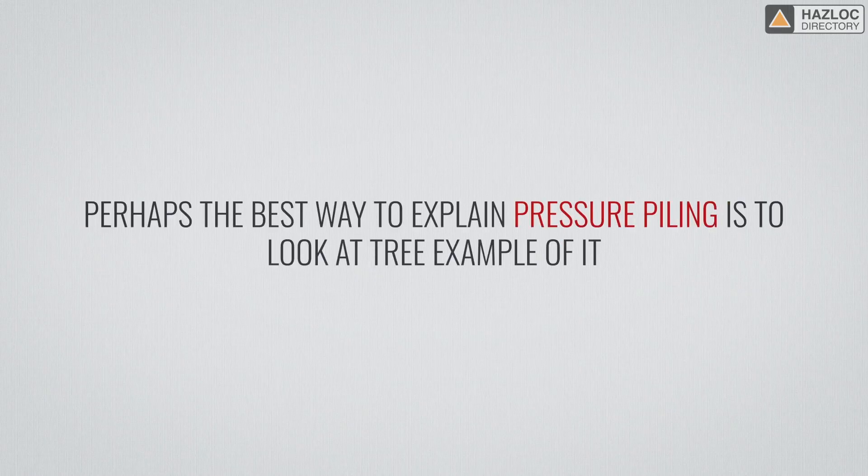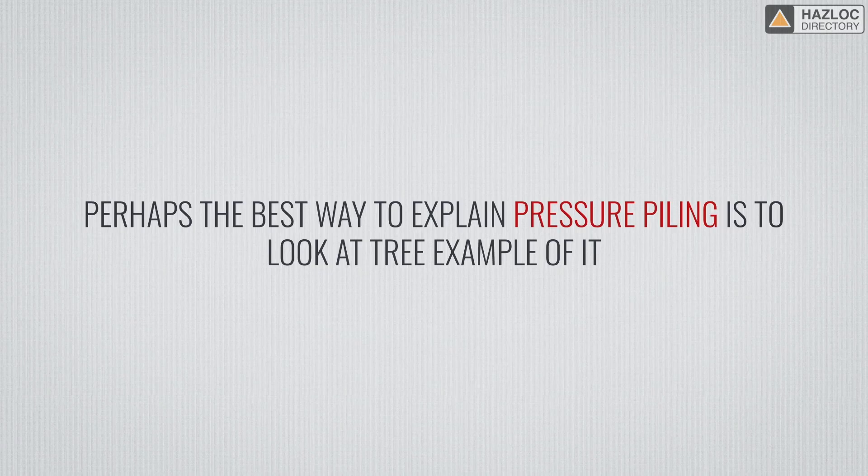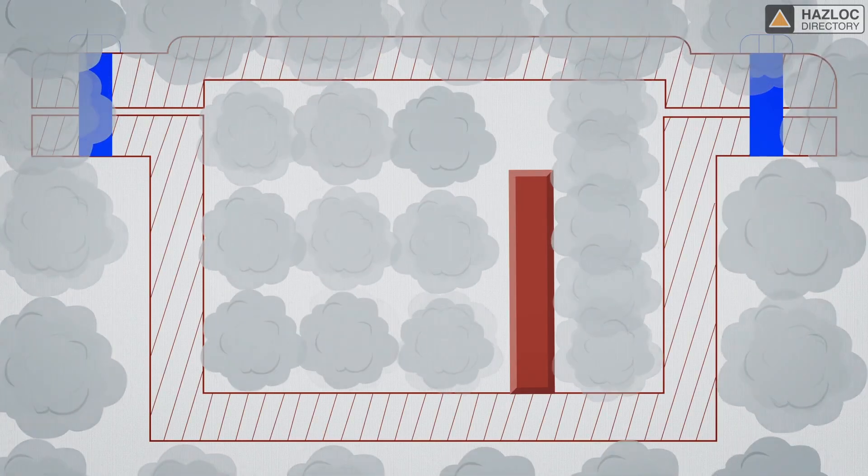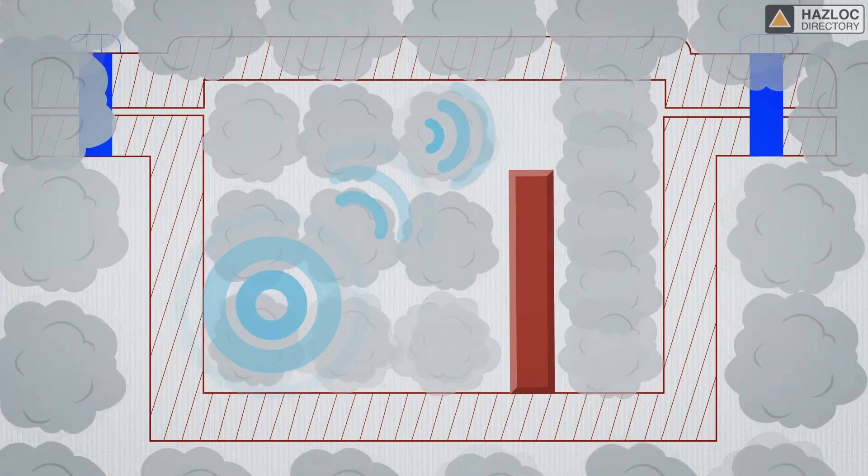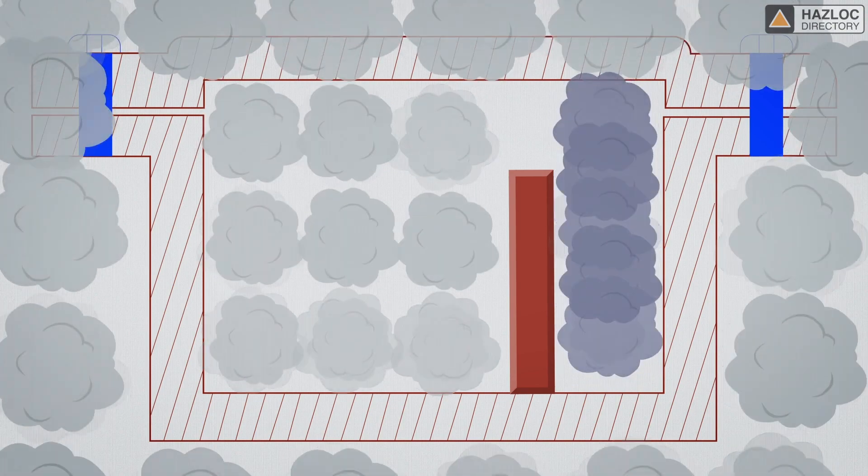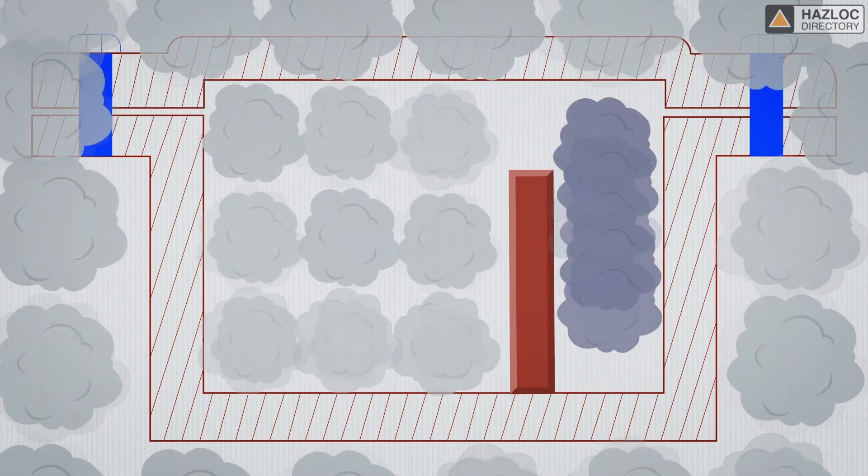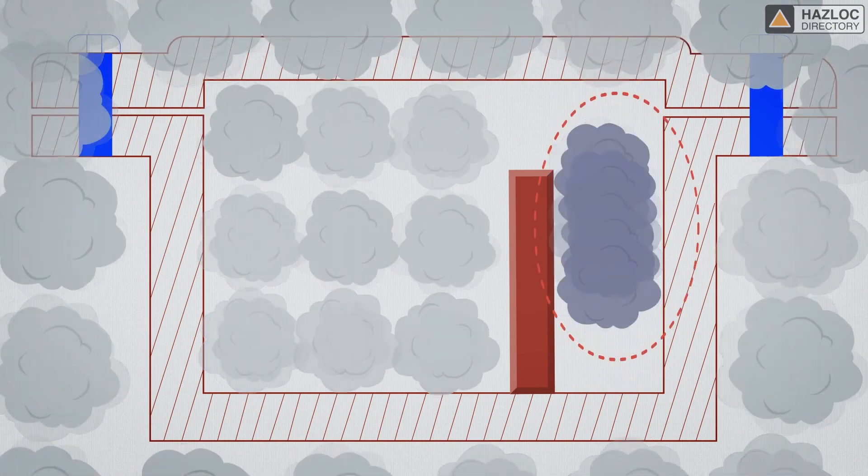Perhaps the best way to explain pressure piling is to look at three examples of it. In our first example, the design of an explosion-proof enclosure with two or more compartments allows unburned gas to collect in a particular space within the enclosure. The unburned gas in this space becomes compressed and therefore highly pressurized before being ignited.